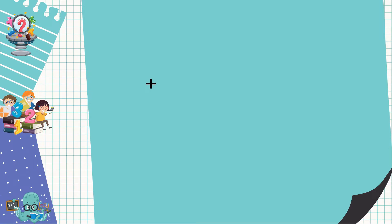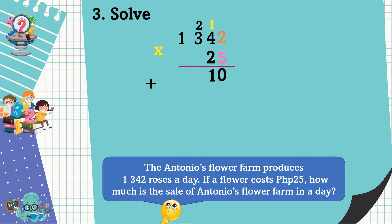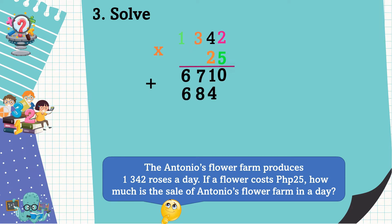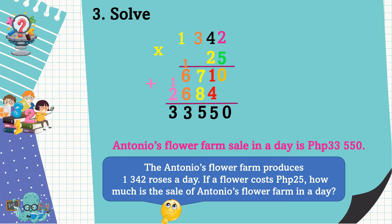We are going to solve the problem. Let's solve 1,342 times 25. 5 times 2 is equal to 10 — write 0, regroup 1. 5 times 4 is equal to 20, plus 1 is equal to 21 — write 1, regroup 2. 5 times 3 is equal to 15, plus 2 is equal to 17 — write 7, regroup 1. 5 times 1 is equal to 5, plus 1 is equal to 6. Next, 2 times 2 is equal to 4. 2 times 4 is equal to 8. 2 times 3 is equal to 6. 2 times 1 is equal to 2. Then add the partial products — bring down 0. 1 plus 4 is equal to 5. 7 plus 8 is equal to 15 — write 5, regroup 1. 1 plus 6 plus 6 is equal to 13 — write 3, regroup 1. 1 plus 2 is equal to 3.